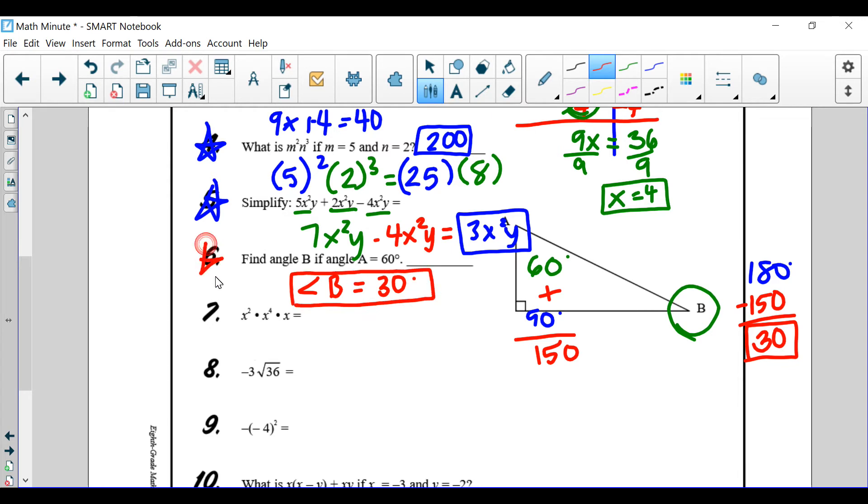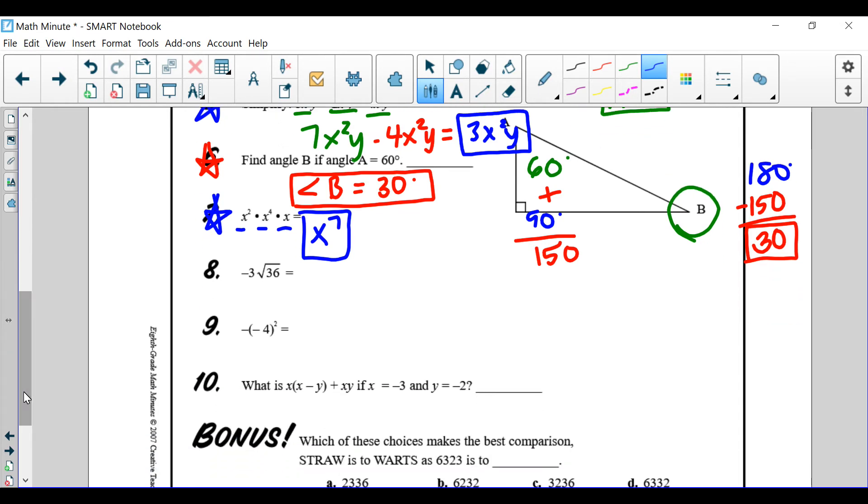Alright, let's continue. Let's go over number 7. Number 7 says x squared times x to the 4th times x. We've got x squared here, x to the 4th, and another x. That's going to be how many x's? 7 x's. Next, let's go over number 8. Number 8, we've got negative 3. Then we've got this square root of 36. Square root of 36 is something times itself is equal to 36. And that something is 6. Alright, so we're going to times it by 6. And we get negative 3 times 6, which will be negative 18.